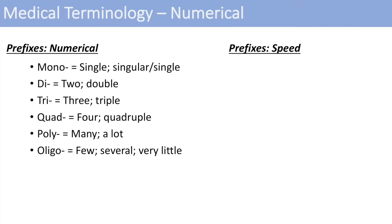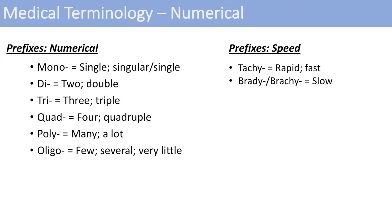For prefixes related to speed: we have tachy, which means rapid or fast, and brady, which means slow. For these terms, you typically think of the heart — you can have tachycardia or bradycardia. So they're just different terms to describe the speed of the heart rate.